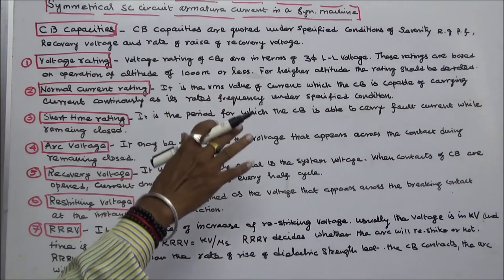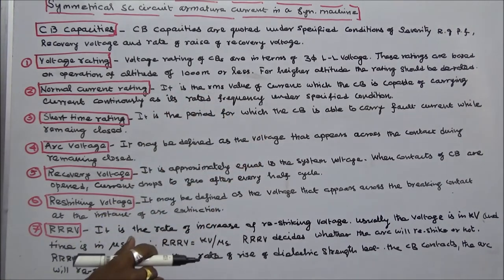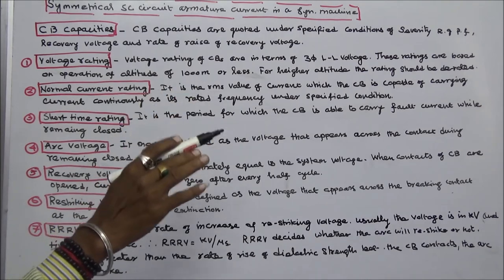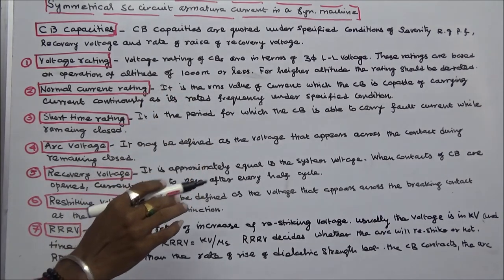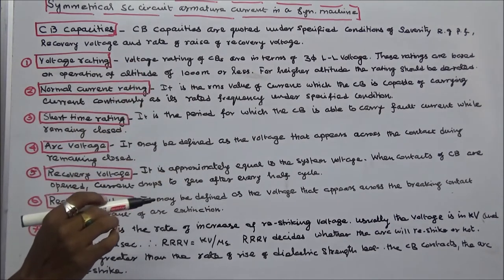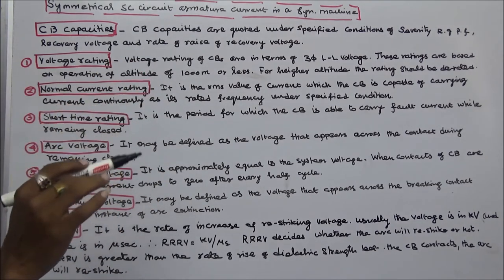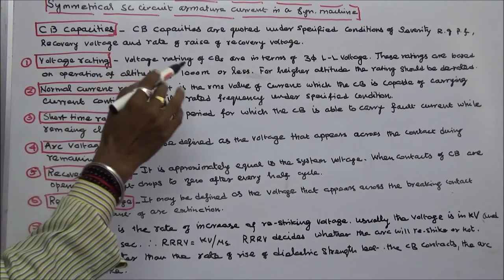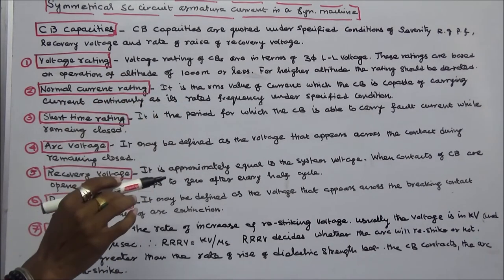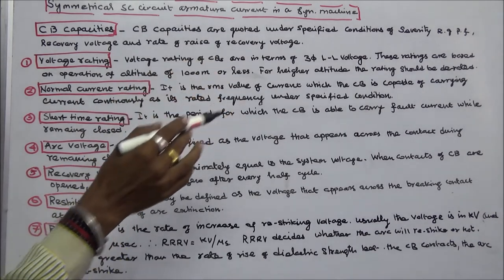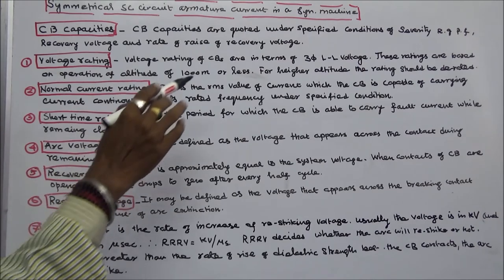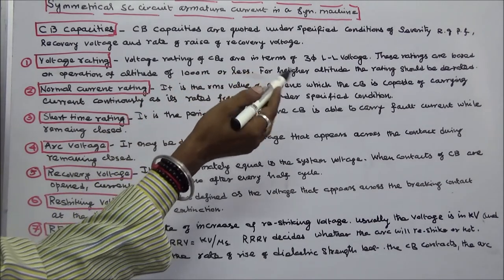The following terms are very useful for fault calculation. Circuit breaker capacities are quoted under specified conditions, e.g., power factor, recovery voltage, and rate of rise of recovery voltage. First, voltage rating: voltage ratings of circuit breakers are in terms of three-phase line-to-line voltage. These ratings are based on operation at an altitude of 1000 meters or less. For higher altitudes, the rating should be derated.